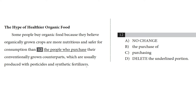Let's go back to the question. Feel free to pause the video if you want to take a crack at it yourself. I'm going to plug the options into the choices and see if the comparisons are logical. People who buy organic food believe that organically grown crops are more nutritious and safer for consumption than — choice A — the people who purchase their conventionally grown counterparts. So organically grown crops are more nutritious than people? That's an illogical comparison. I'm going to cross off choice A.